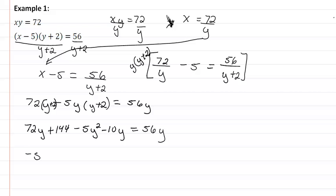So we now have negative 5y squared plus 62y plus 144 equals our 56y. Let's subtract that.